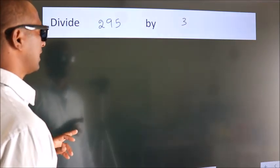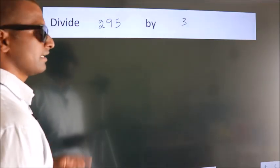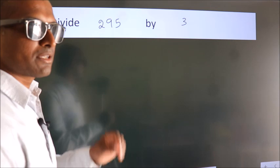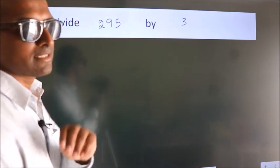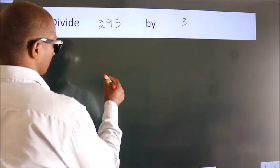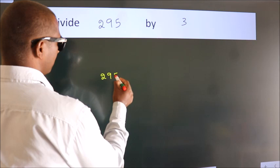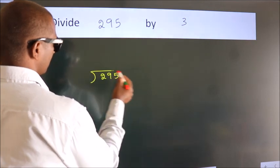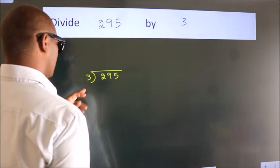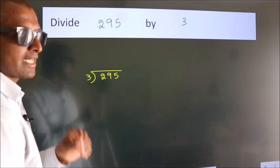Divide 295 by 3. To do this division, we should frame it in this way. 295 here, 3 here. This is your step 1.